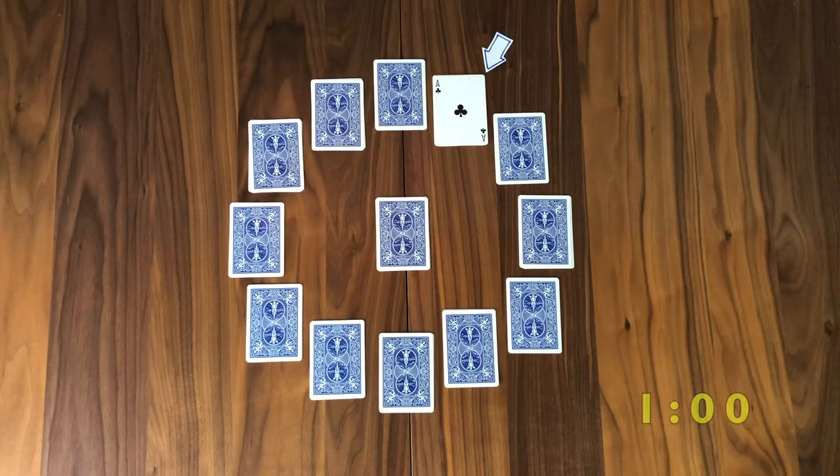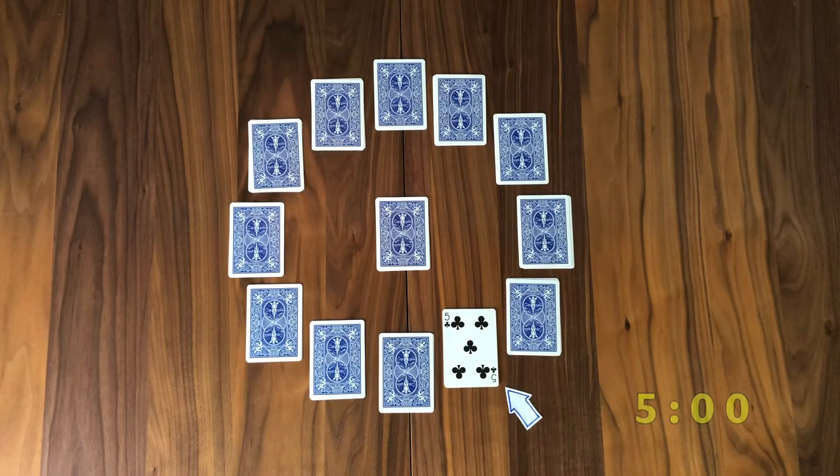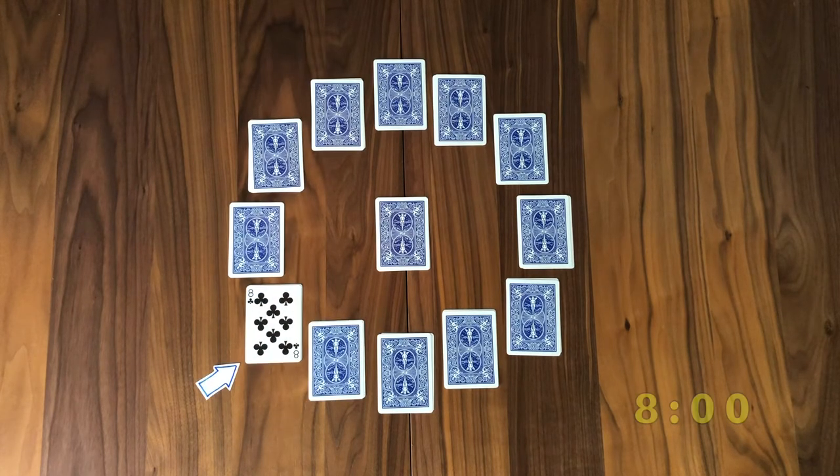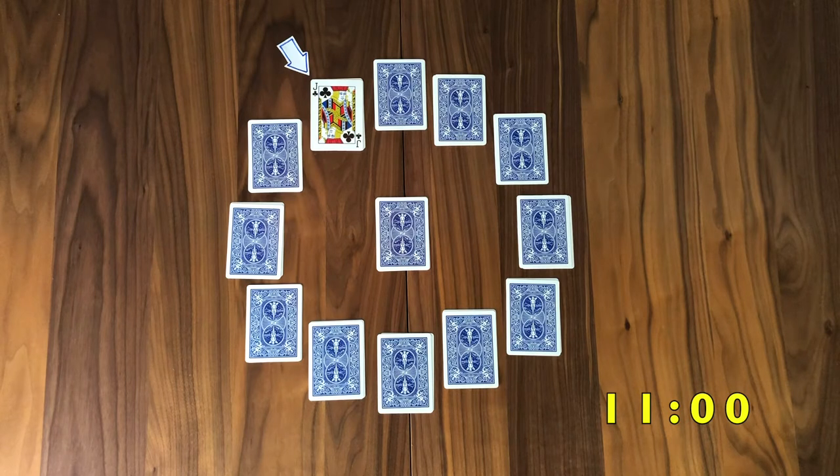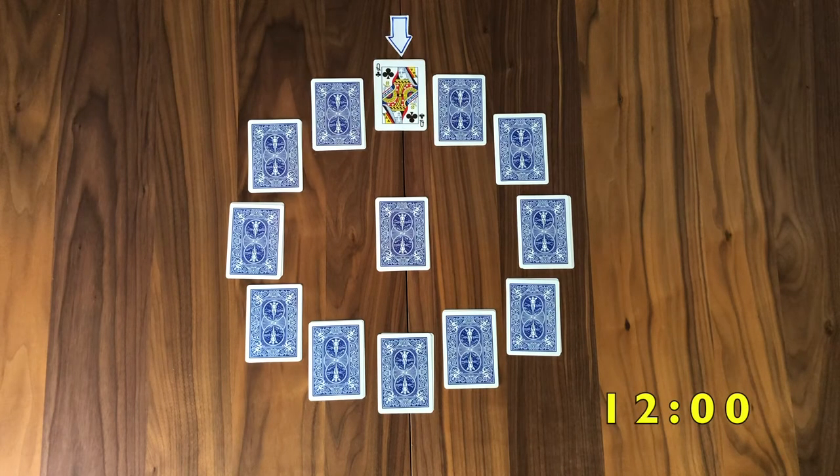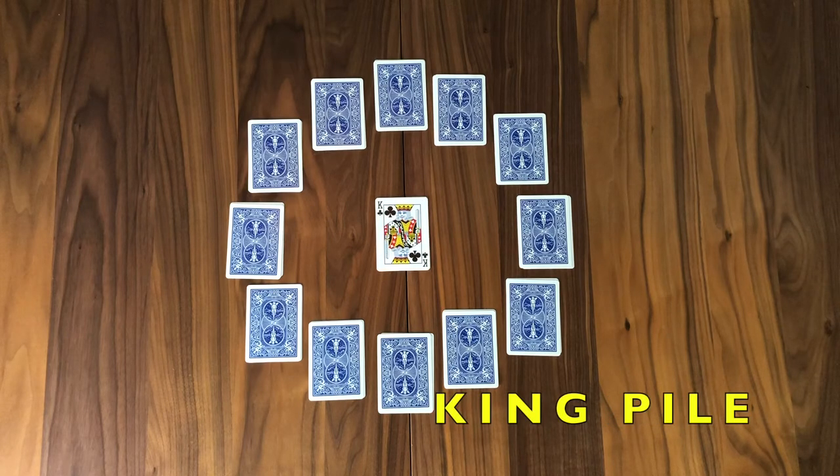So you see here, one, two, three, four, five, six, seven, eight, nine, 10, 11. The jack is the 11th card, and then 12, which is the queen here at the top in the high noon position. And then dead center is the dreaded king pile.